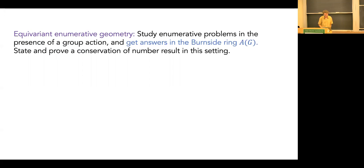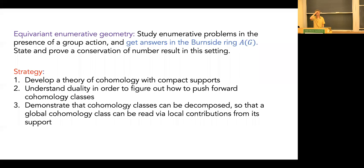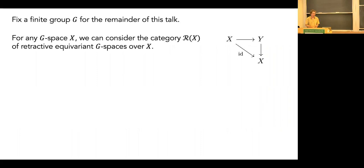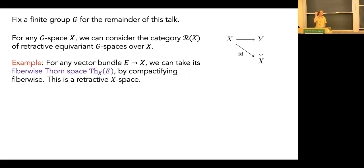The goal technically is to work with cohomology with compact supports, understand duality in a parameterized equivariant setting, push forward cohomology classes, and decompose Euler classes as sums of indices over supports. Let's fix a finite group G. For any G-space I can consider a category of equivariant retractive G-spaces — the idea is to replace the role of a basepoint in pointed topological spaces with your favorite space X. I look at spaces based at a full copy of X, possibly with equivariance.